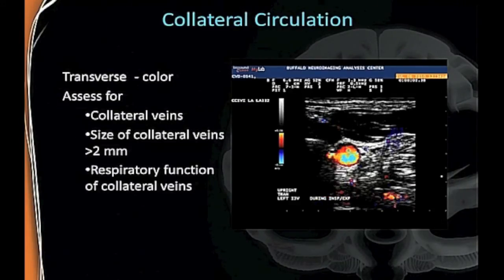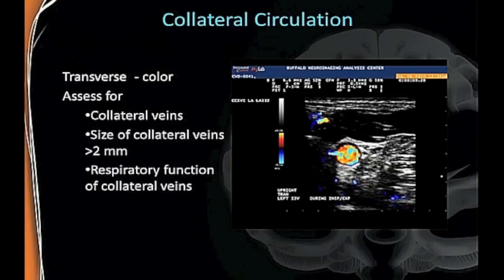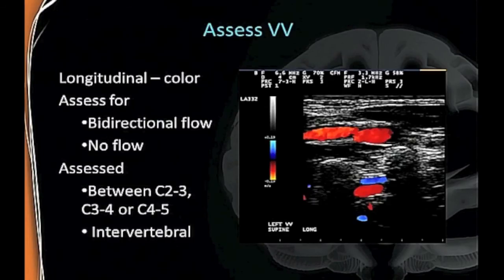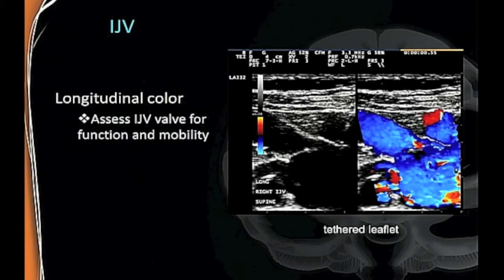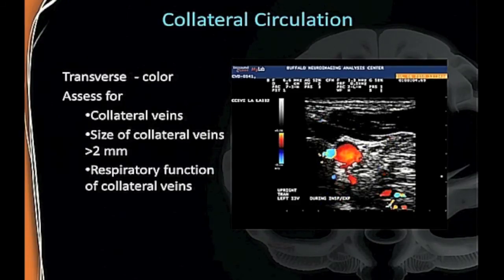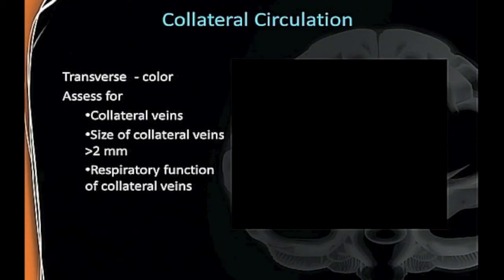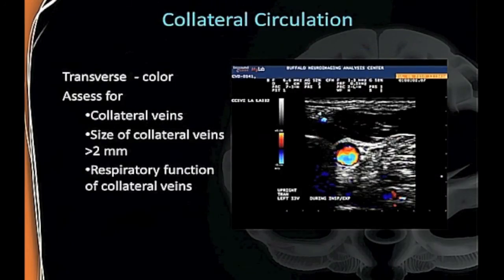When looking for collateral circulation, you can see how small the jugular is. We have patients take deep breaths in and out. What happens is the collateral responds to the breathing, not the jugular. So the jugular is no longer the primary pathway outflow in supine—this collateral is now the primary pathway because it's totally responding.